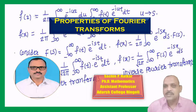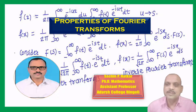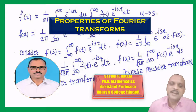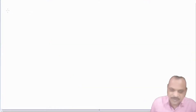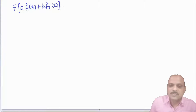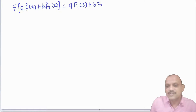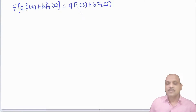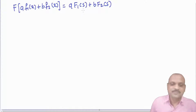Hello friends, in this new video we discuss a few properties of the Fourier transform. The very first property is the linearity property. If we have two functions f1(x) and f2(x), then the Fourier transform of a·f1(x) + b·f2(x) equals a·F1(s) + b·F2(s) — the Fourier transform of the first function plus the Fourier transform of the second function.